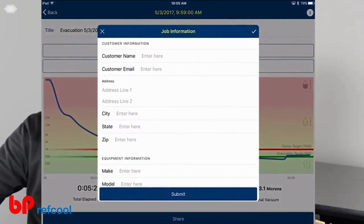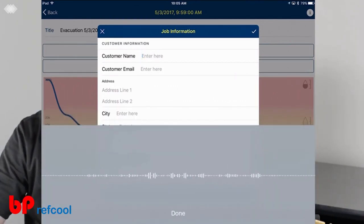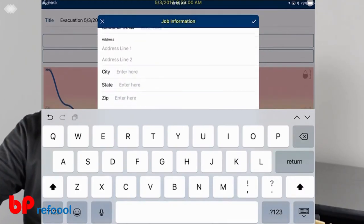I can add in job site information. I'll tap on customer name. This will allow you to use Siri. Jim Bergman. Hit done. It takes it in. It's a little quicker if you don't like to type.